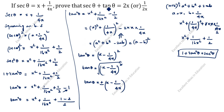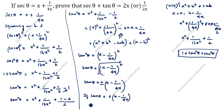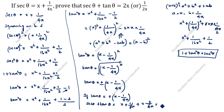Now we need to prove secant theta plus tan theta equals 2x or 1 by 2x. The secant theta value is given as x plus 1 by 4x. We just calculated tan theta as plus or minus x minus 1 by 4x. Taking tan theta equal to positive x minus 1 by 4x: secant theta plus tan theta equals x plus 1 by 4x plus x minus 1 by 4x.